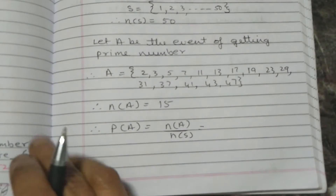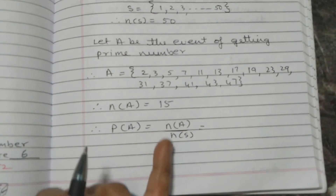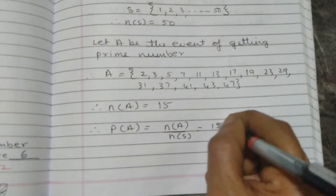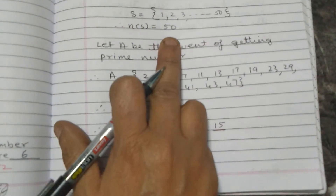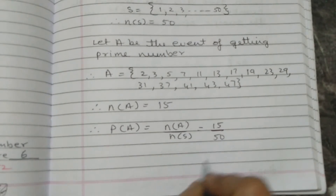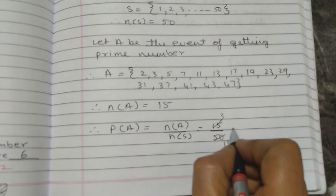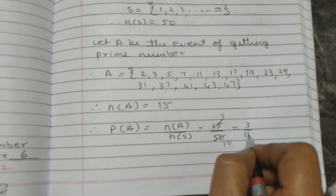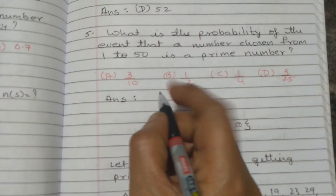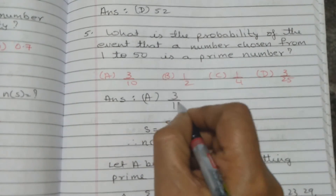Now we find the probability of this event. The formula is P(A) = NA upon NS. NA is 15 and NS is 50. So 15 upon 50 — dividing both by 5 gives 3 upon 10. The answer is 3/10 and the correct option is A.